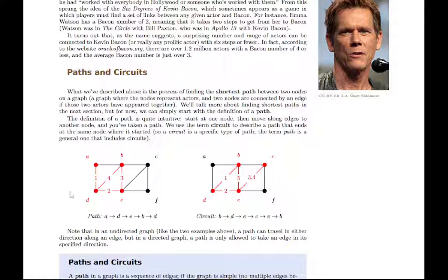Notice that in this first example we didn't reuse any edges, but in the second example we did. We went down from B to D and over to E, then we went up to C and back along the same edge. So we use the same edge twice, and that'll be significant later in this section.